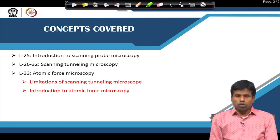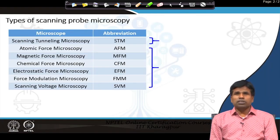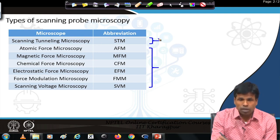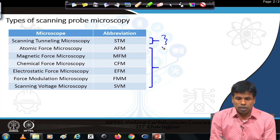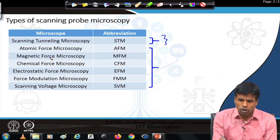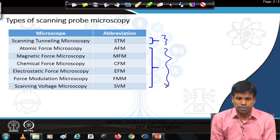Before we begin with atomic force microscopy, let us talk about the disadvantages or limitations of scanning tunneling microscopy. As you can see in the slides, there are many techniques under the umbrella of scanning probe microscopy. In one case we have scanning tunneling microscopy; in all other categories, a certain type of force is incorporated. We measure that force and utilize it to create the surface image — that is why we call them force microscopy techniques.